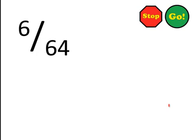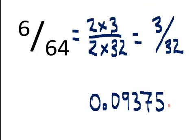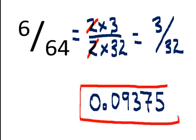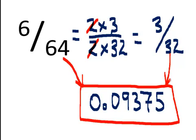Give it a whirl — press on the stop sign. Well, 6 can be factored as 2 times 3 and 64 can be factored as 2 times 32. That means this 2 cancels with that 2 and we wind up with 3 over 32. And if you wanted to know what that was as a decimal, both 6 sixty-fourths and 3 thirty-seconds would give us the same product if we did the long division.